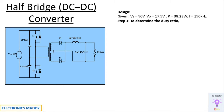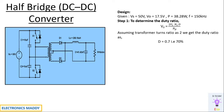Our first step is to determine the duty ratio. Vout is equal to 2·Vs·Ns·D divided by Np. Assuming a turns ratio of 2, you'll be getting 70 percent. But what we will be doing is using a duty ratio of 50 percent. The reason is very simple — to demonstrate the simulation of this circuit in an easier way.